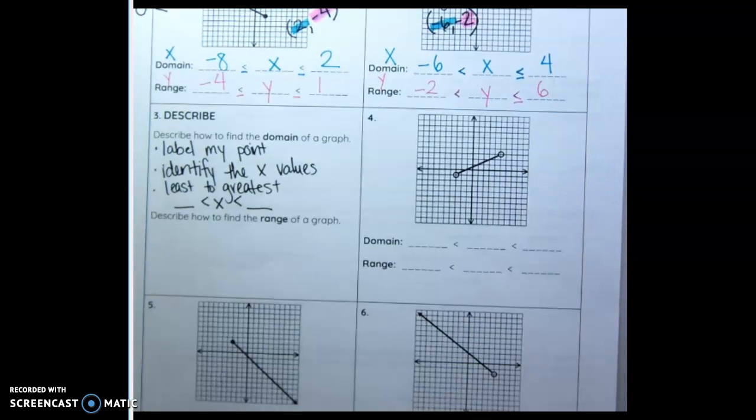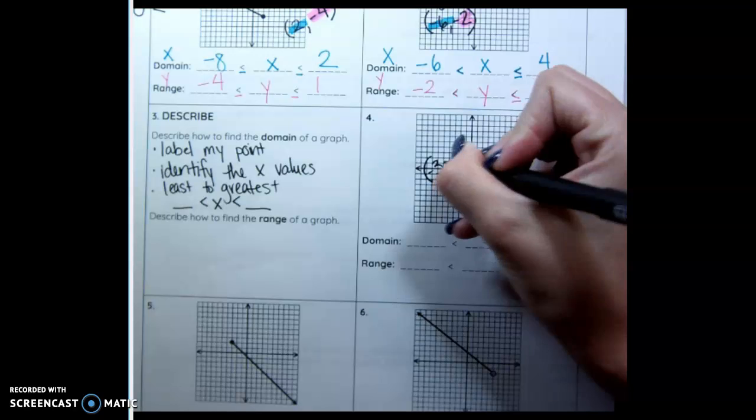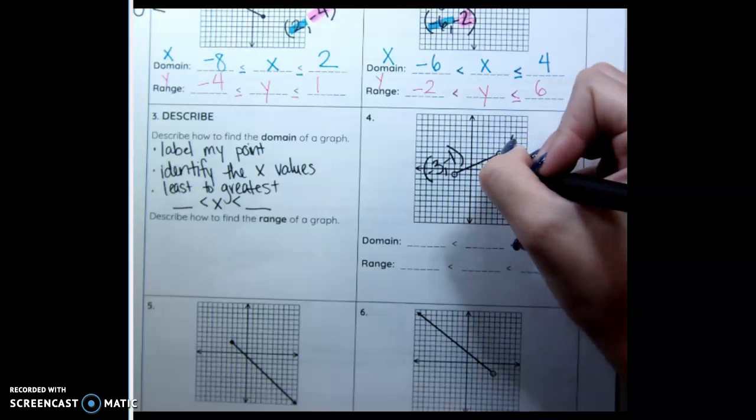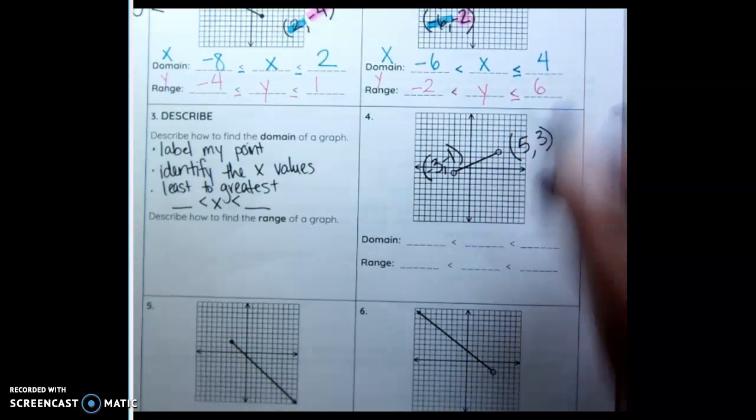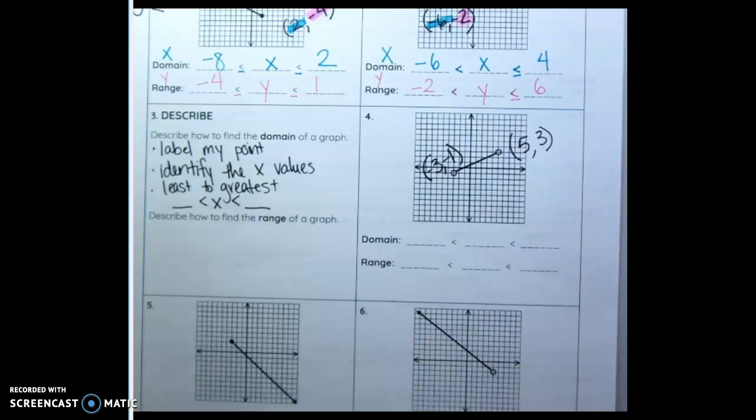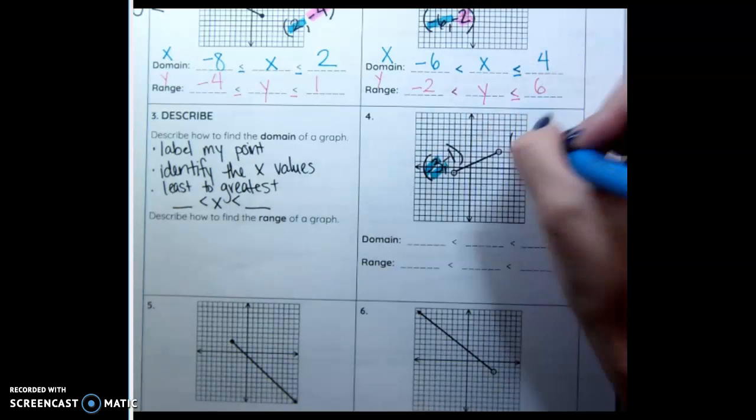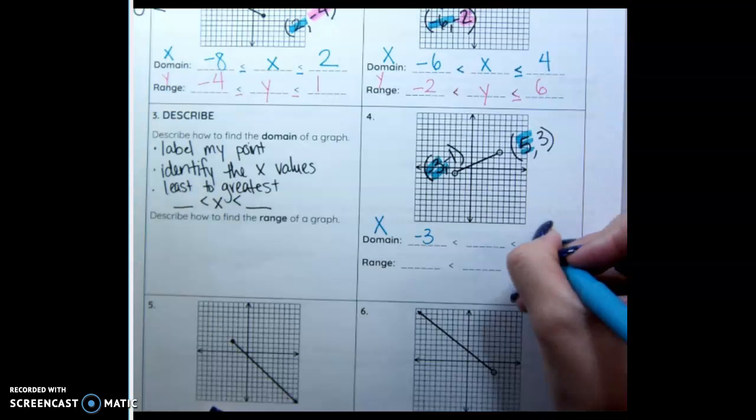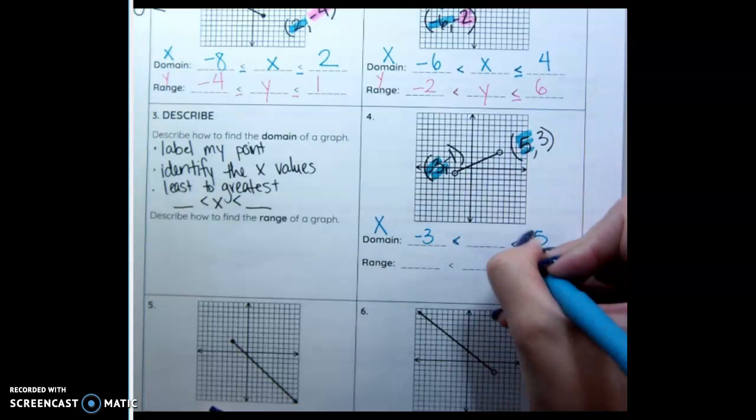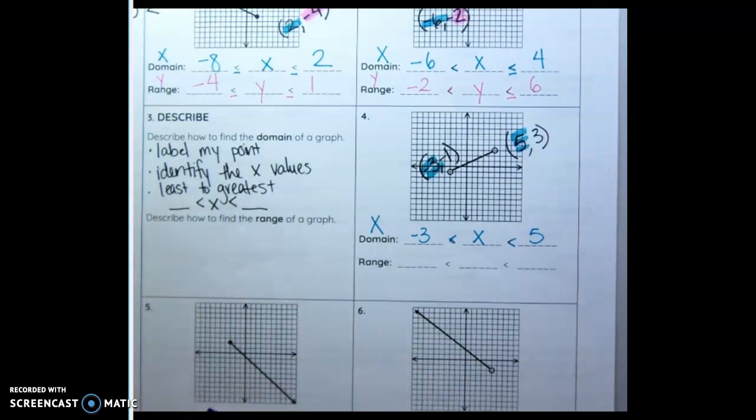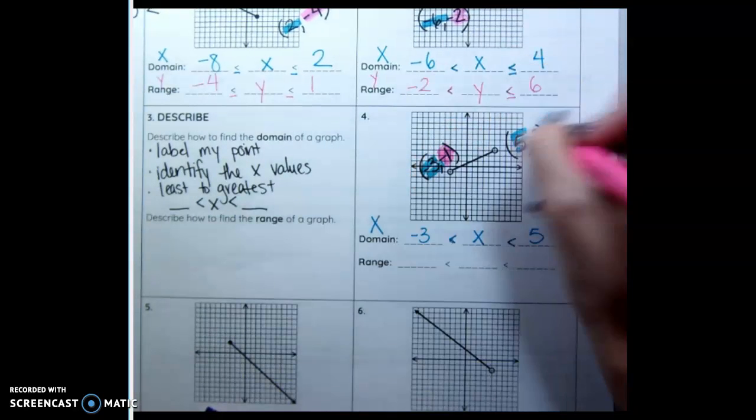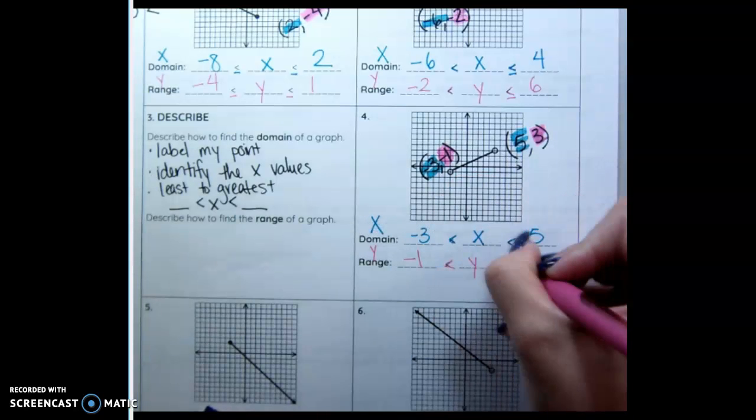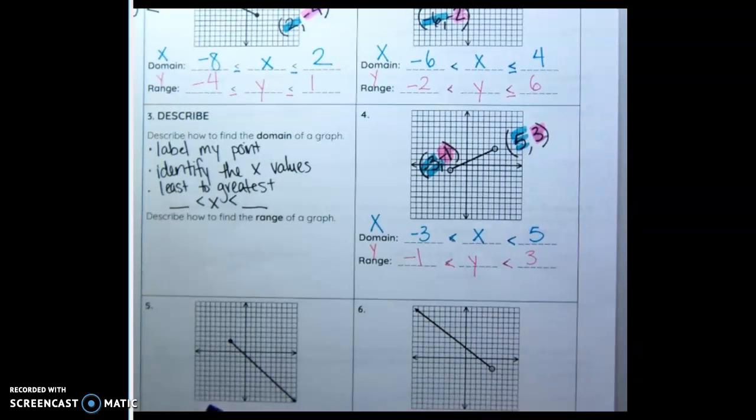Let's look at number 4. Again, label my points. This is negative 3, negative 1. This is 5, 3. Highlighting my domain in the blue. So negative 3 and 5. They're both open. So they both get that. And x goes in the middle. Now my range. Negative 1 and 3. Negative 1 is less. It's open. Y goes in the middle. 3 is the highest value I can get.